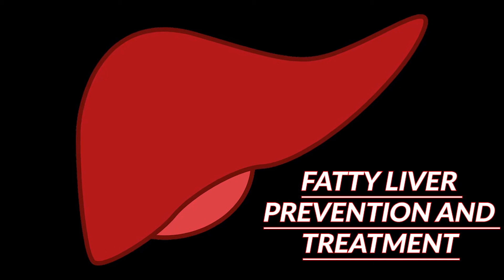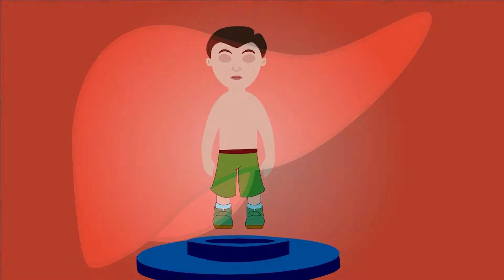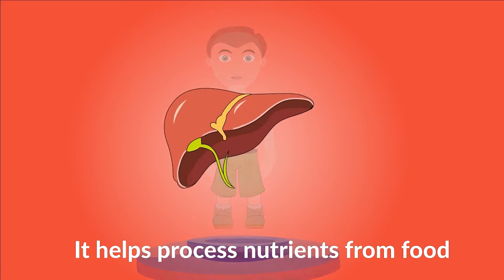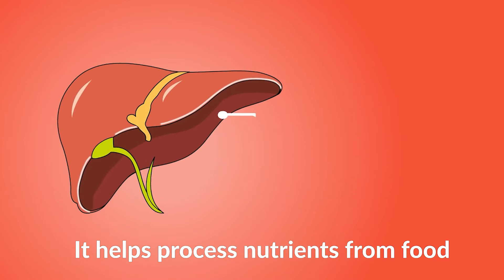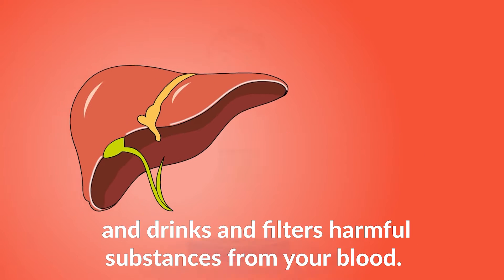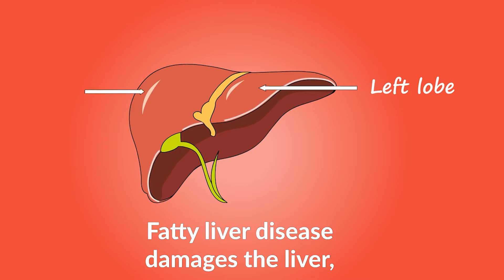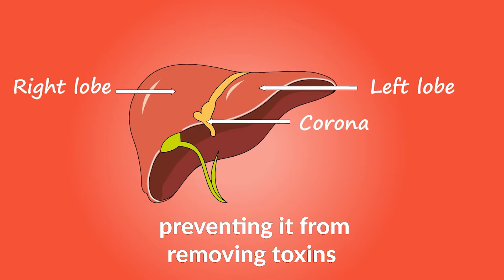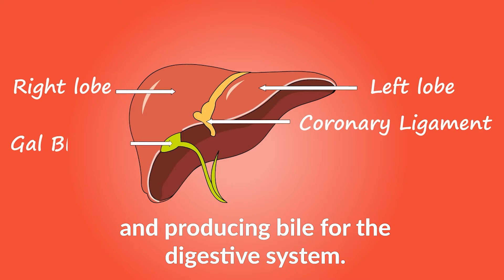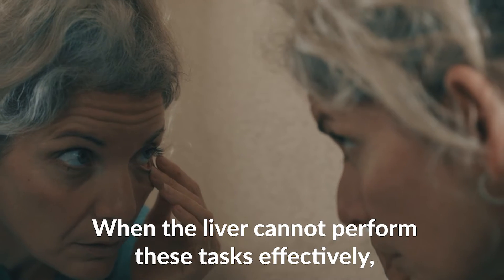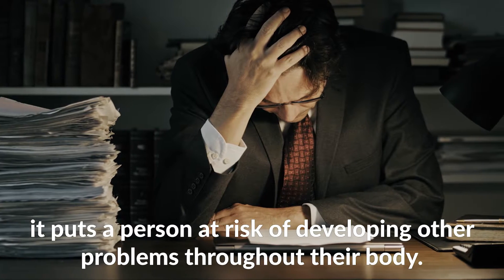Fatty liver prevention and treatment. Your liver is the second largest organ in your body. It helps process nutrients from food and drinks and filters harmful substances from your blood. Fatty liver disease damages the liver, preventing it from removing toxins and producing bile for the digestive system.